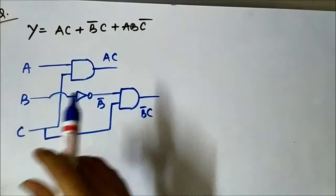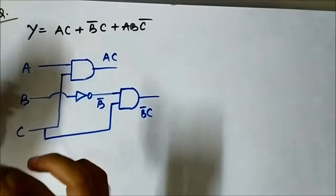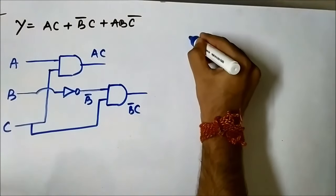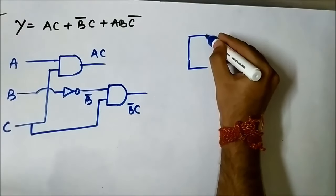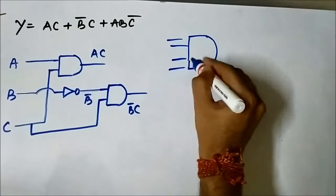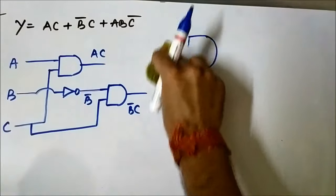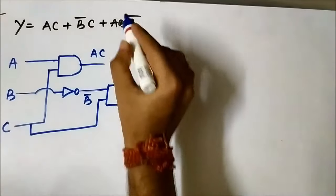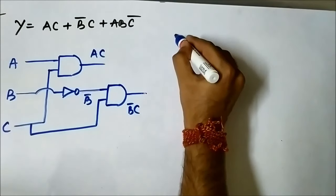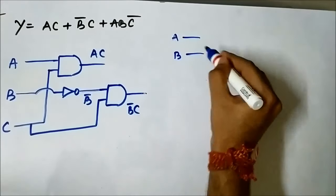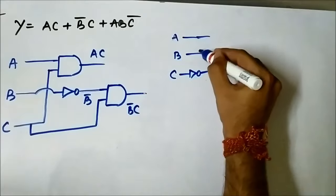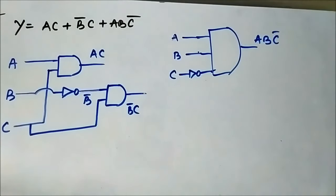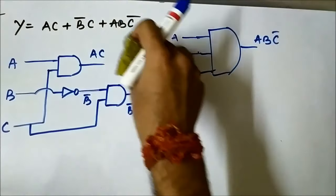Now for ABC̄: it depends on what is given in the question. We have logic gates which can have multiple inputs — two inputs, three inputs, four inputs, five inputs. If the question states you can use a three-input AND gate, you can give A, B, and C through an inverter directly to a three-input AND gate and get ABC̄. But here nothing has been mentioned like that, so we cannot use a three-input AND gate. We have to do it in steps.